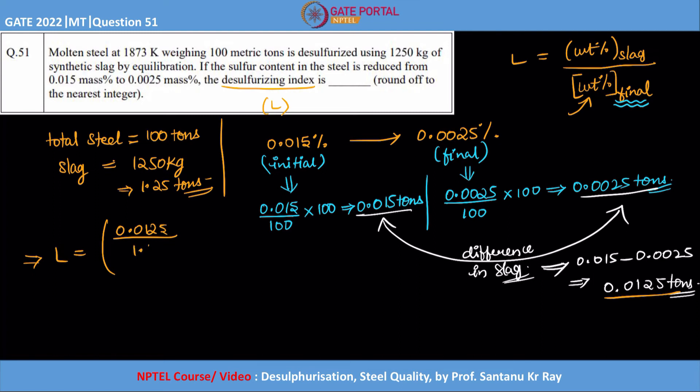So here, remember the final thing must be used here, so that is equal to 0.0025 and the overall weight is again 100 into 100. So now if you carefully observe, this is 100 times so 100 gets cancelled, this is also cancelled.